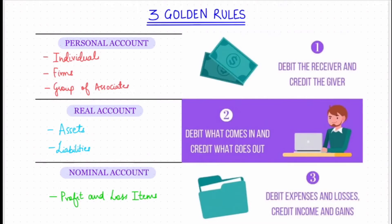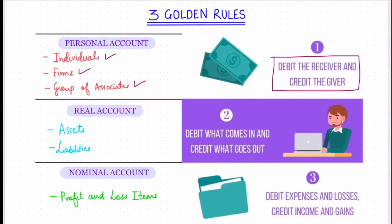The three accounts are: personal account, real account, and nominal account. Personal account includes transactions relating to individuals, firms, or a group of associates. The rule says: debit the receiver and credit the giver. For example, you paid rupees 500 for office supplies to company ABC — you will debit company ABC as they are the receiver of the money, and credit your cash account.